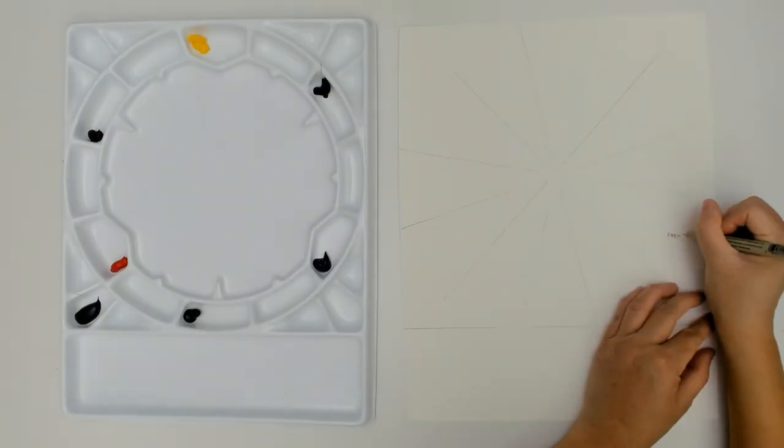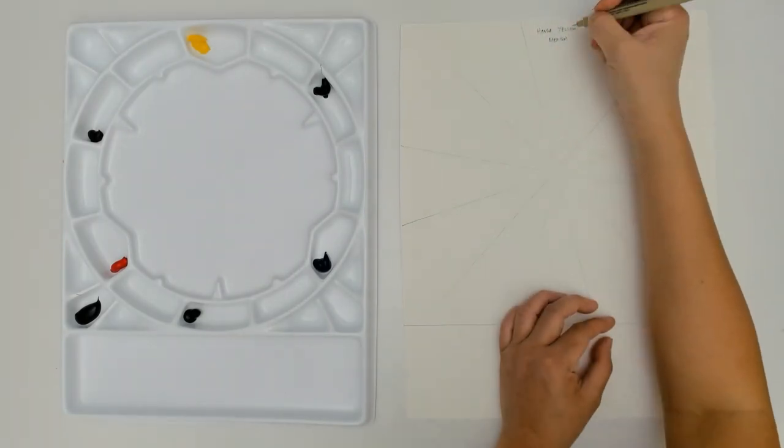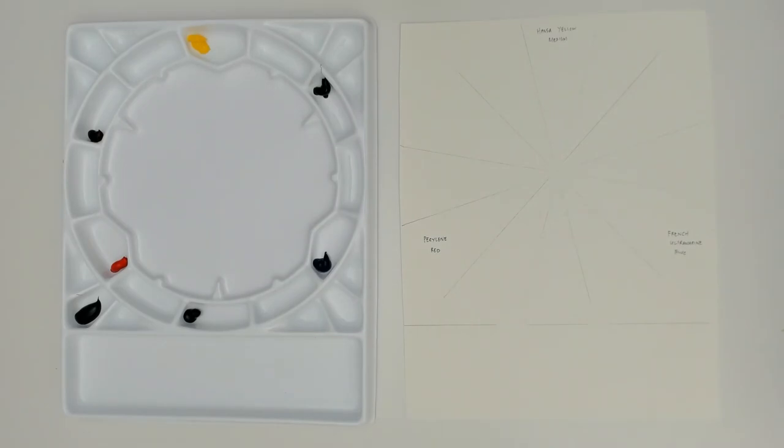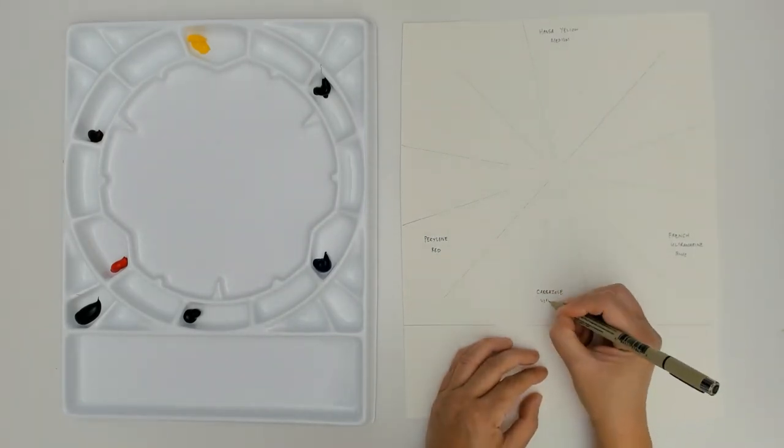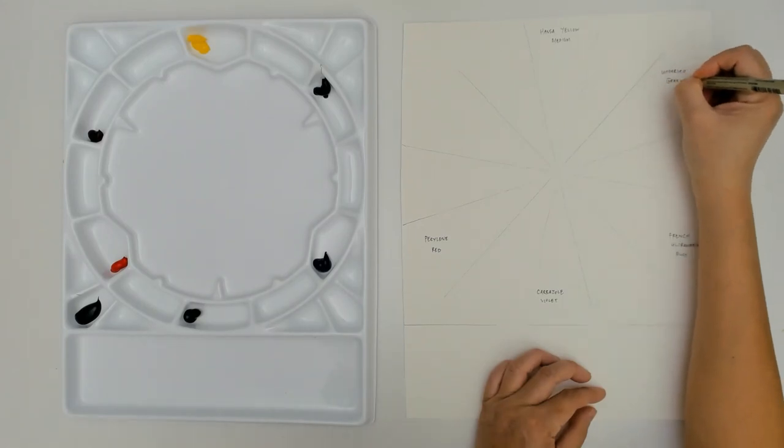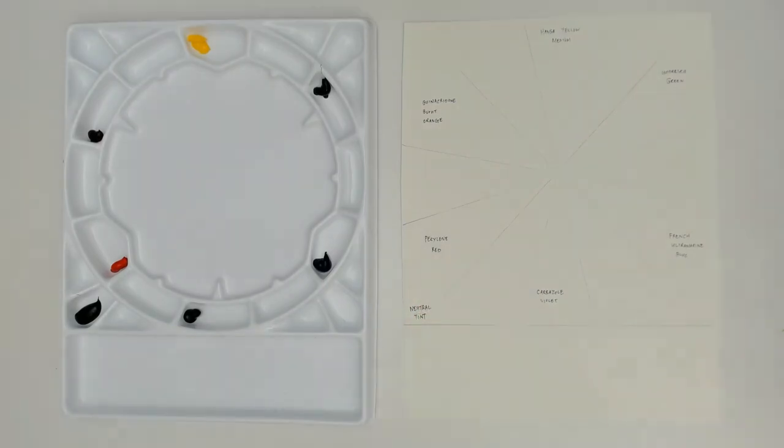With a waterproof micron pen, I'm writing the names of the colors. In the past, I would omit this step thinking that I would remember what the actual colors are, but I never do. So now I learned my lesson and I always write the names. Once you have so many colors, it gets very confusing and it's really important to know which color it is or which brand of watercolor it is.